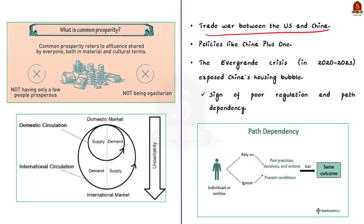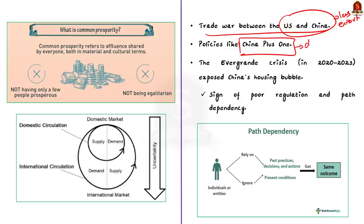Trade tensions with the United States impacted China's export growth. As China started weaponizing its trade, world nations started adopting the China-plus-one policy — developing alternate supply chains away from China. This also impacted export growth and job growth, further slowing down the Chinese economy.